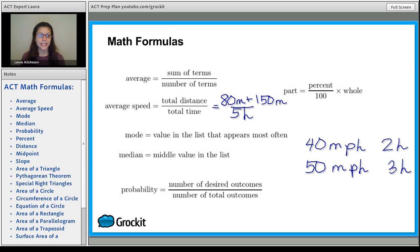When you take a look at mode and median, these are similar to the ideas of average and average speed in that you want to know what the difference is, and you want to know how to spot them. So if you have a list of numbers for mode, just look for the one that appears the most often. And then for median, you're actually looking for the middle value.